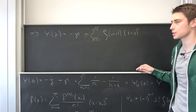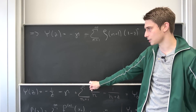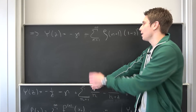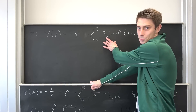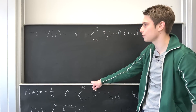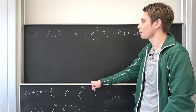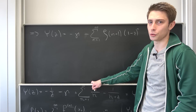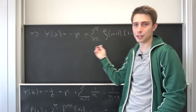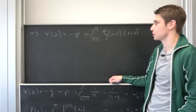We can make this even more beautiful by pulling a -1 outside and collecting terms, turning it into: ψ(z) = -γ + the sum from n=1 to infinity of ζ(n+1) times (1-z)^n. This is our digamma function as a Taylor series expansion, and it's pretty cool. If you expand this, you get an infinite series inside an infinite series, and it's absolutely beautiful and actually quite useful for evaluating many things.